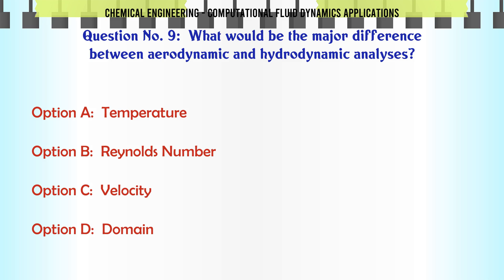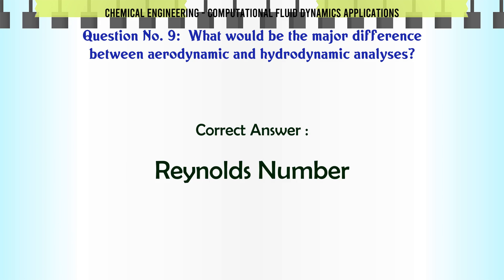What would be the major difference between aerodynamic and hydrodynamic analysis? A. Temperature. B. Reynolds number. C. Velocity. D. Domain. The correct answer is: Reynolds number.